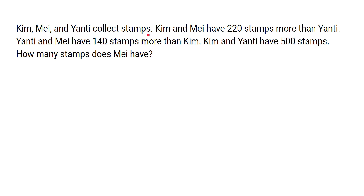Kim, May, and Yanthi collect stamps. Kim and May have 220 stamps more than Yanthi. The second condition is: Yanthi and May have 140 stamps more than Kim. Notice that May is constant in both cases, while Kim and Yanthi are the ones changing.